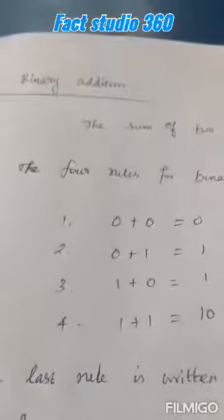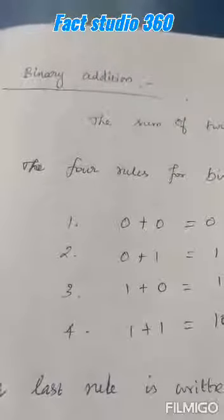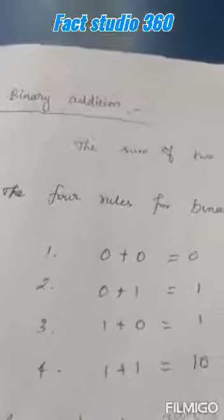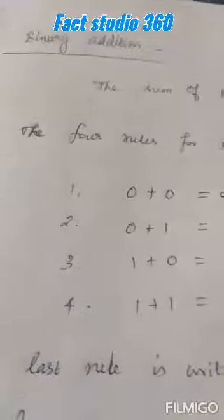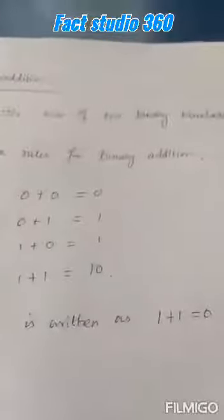We already know that in binary numbers we have only 0 and 1. The binary digits are 0 and 1. There are four rules to follow for binary addition.